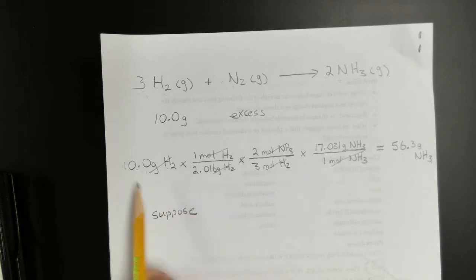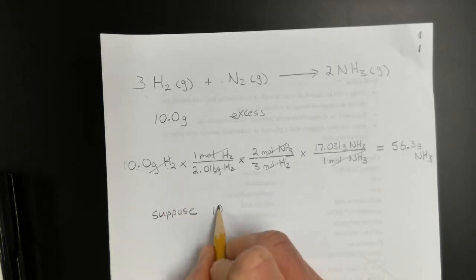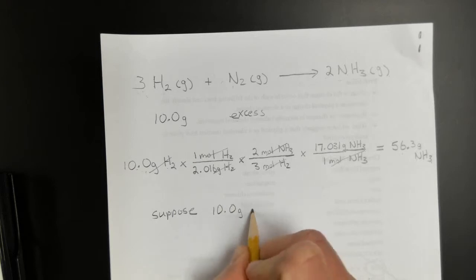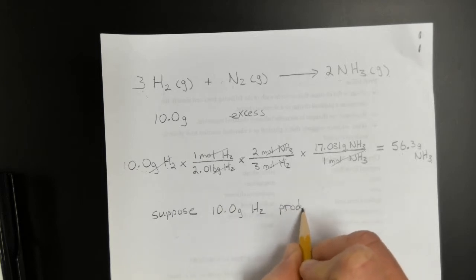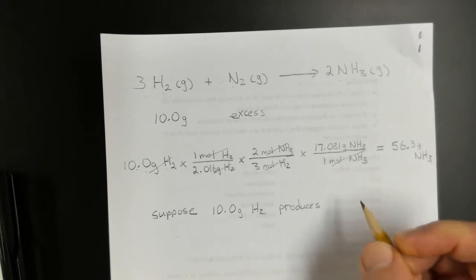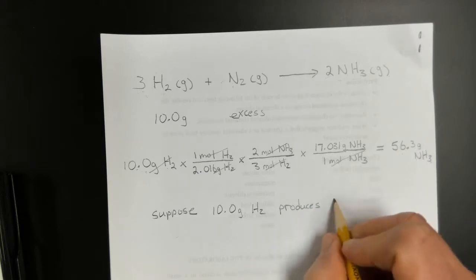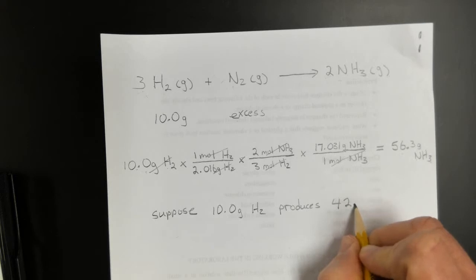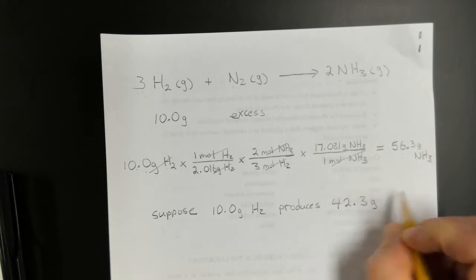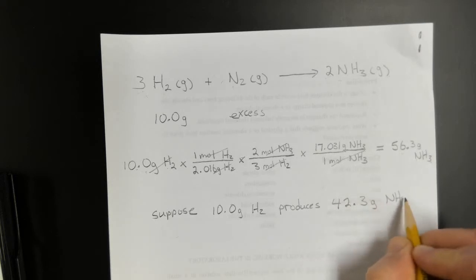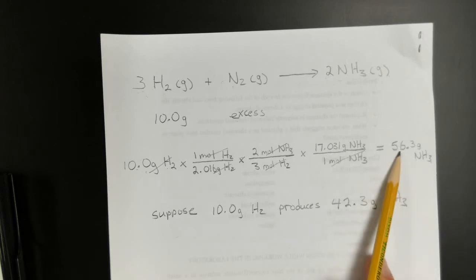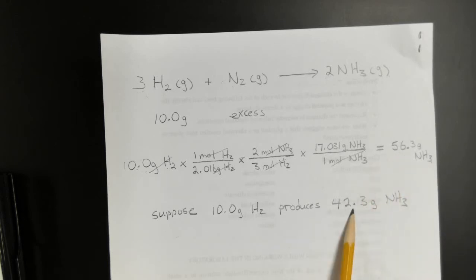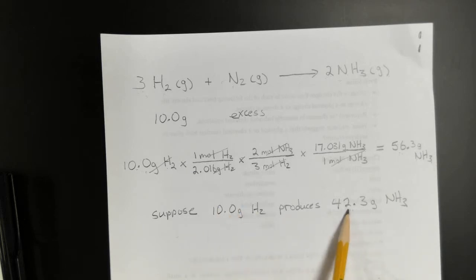Now for percent yield: suppose we actually do this reaction and 10.0 grams of H₂ produces 42.3 grams of ammonia. That's how much we theoretically could have made — 56.3 grams — but in actuality, starting with 10 grams of H₂, we only produced 42.3 grams of ammonia.